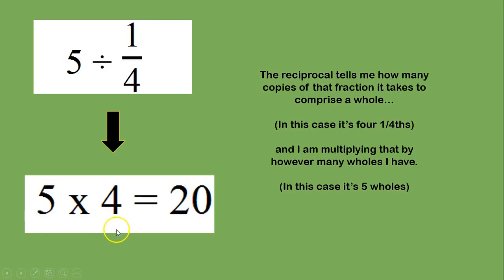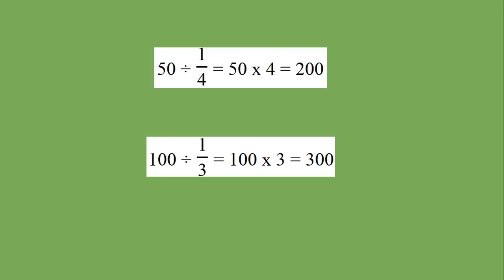So I have that four and that five and I can multiply them to get 20. This can continue on with whatever number is provided. So 50 divided by one fourth is 50 wholes and each of those wholes is four one fourths and you get 200 one fourths in 50.